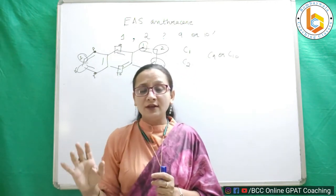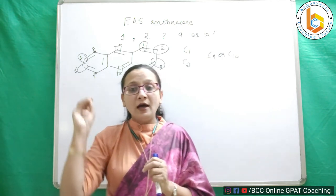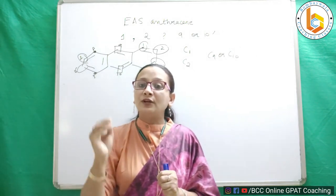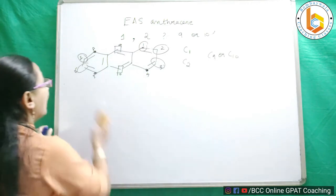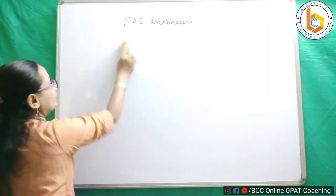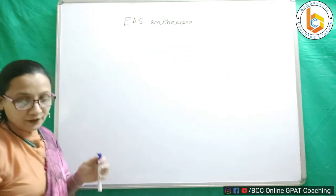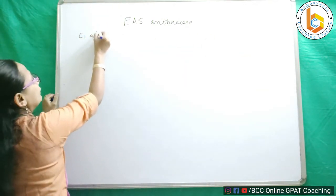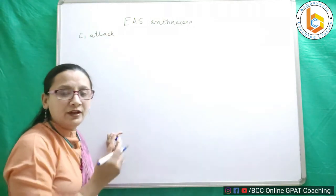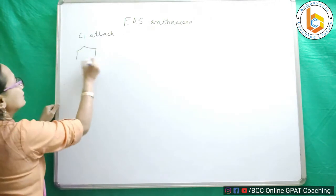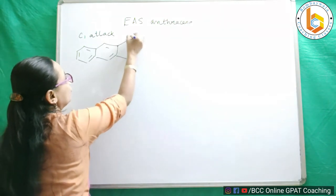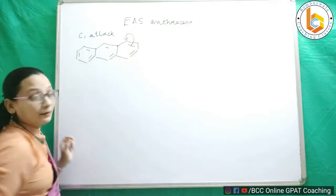To find out which position is preferred, there is only one method. Let us begin with attacking at carbon number 1. We have already done this kind of analysis when we were studying naphthalene, and we are going to apply the same approach for anthracene now.